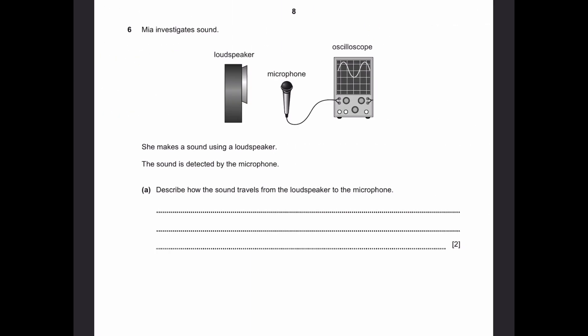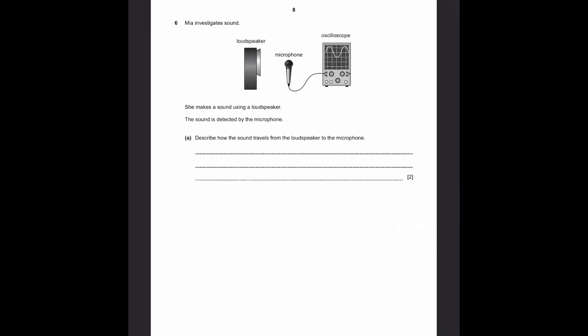Question 6. Mia investigates sound. She makes the sound using a loudspeaker. The sound is detected by the microphone. Describe how the sound travels from the loudspeaker to the microphone. So first of all, the loudspeaker causes vibrations, which in turn, cause sound waves to travel to the microphone. Right? And then, these vibrating particles are picked up by the microphone, in terms of compressions and rarefactions. Typically, sound waves don't travel in these waveforms, or transverse waves.